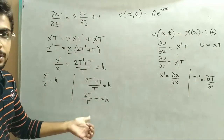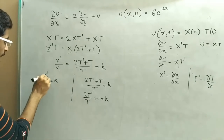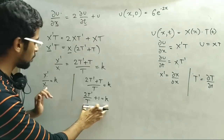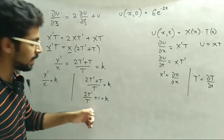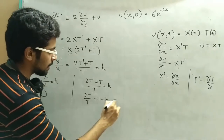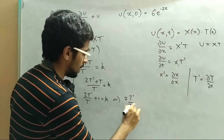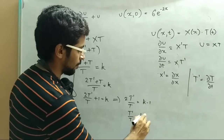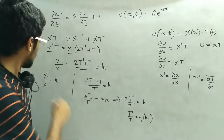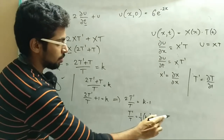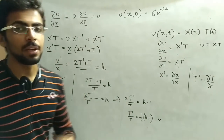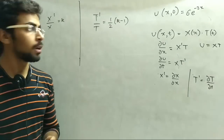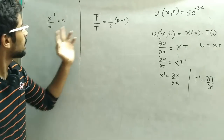So yahan pe X dash ki value aur T dash ki value find karni hai. Now the next step is equation ko form karna hai in terms of X dash upon X and T dash upon T. So 2T dash upon T equals to k minus 1, and finally T dash upon T equals to one half times (k minus 1). So now dono equations ka integration nikalenge - with respect to x and with respect to t - and we will further solve this equation.